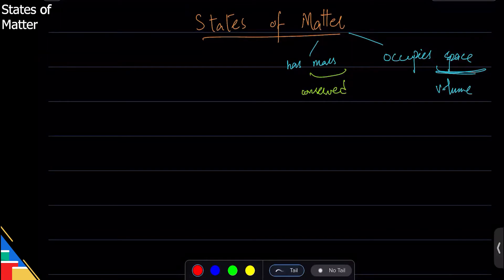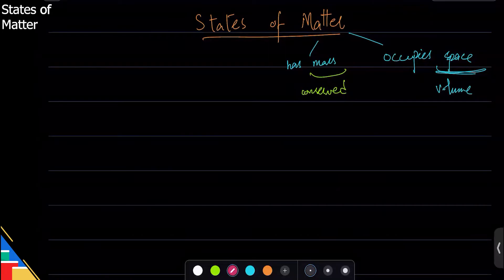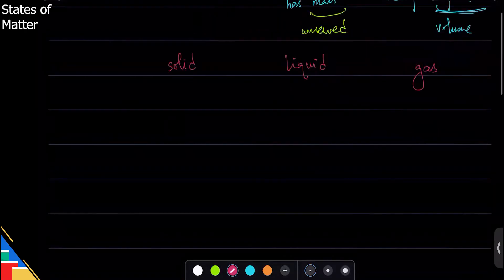Now there are five basic states of matter but we will only focus on three: solid, liquid, and gas. And we will try to see how we basically differentiate between them. So there's solid, liquid, and gas.